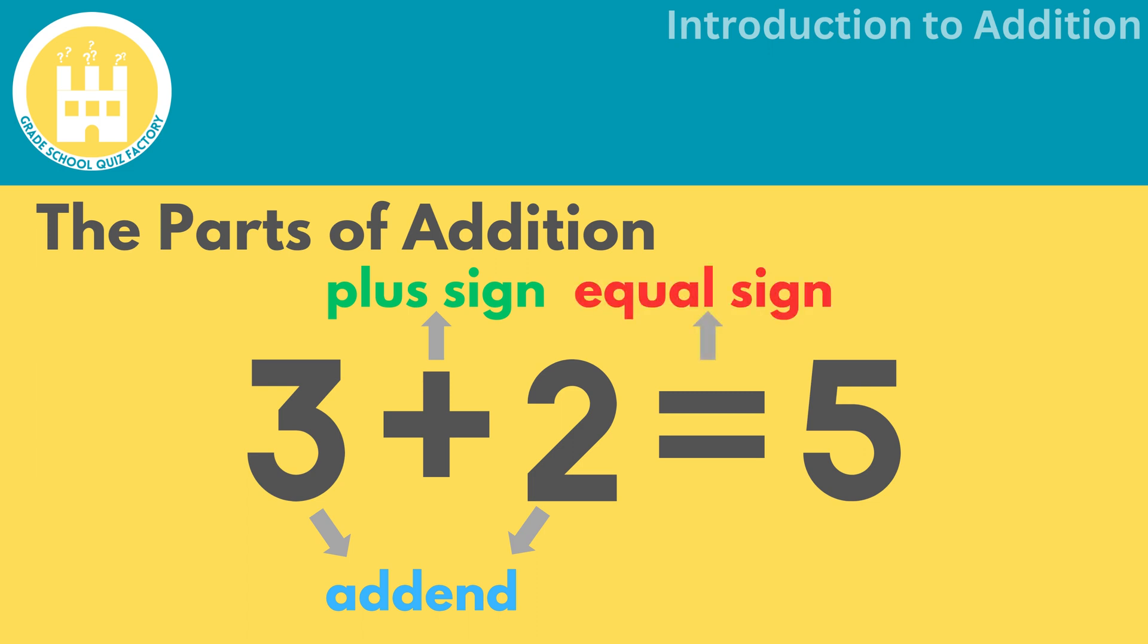Next we have the equal sign. This sign is like a judge that tells us the final answer. It says this is the sum of the numbers we added. It's important to remember that the equal sign separates the numbers we add from the sum.